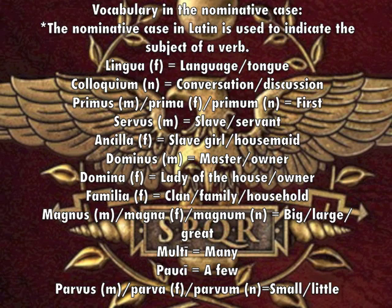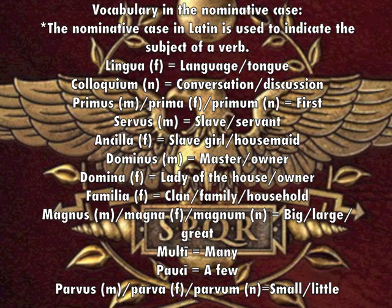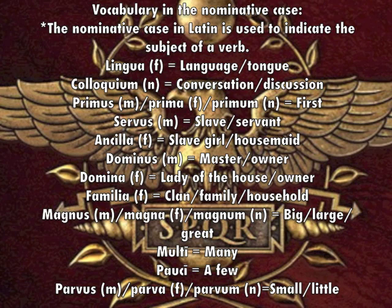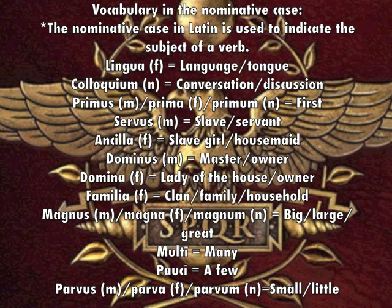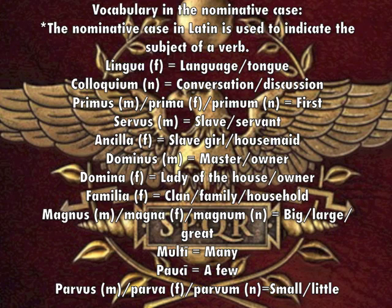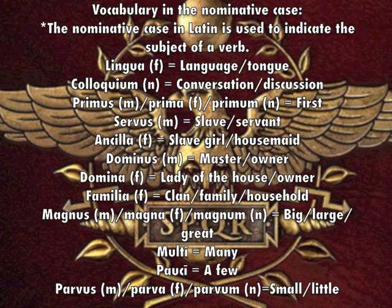Lingua — language or tongue. Coloquium — conversation or discussion. Primus, prima, primum — first. Servus — slave or servant. Ancilla — slave girl or housemaid. Dominus — master or owner. Domina — lady of the house or owner.